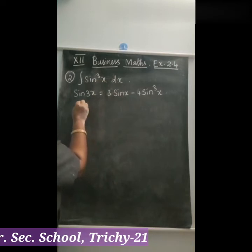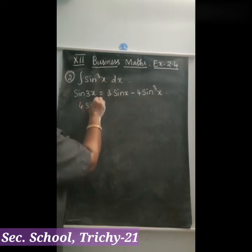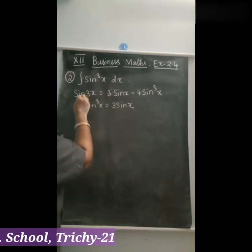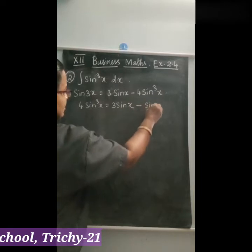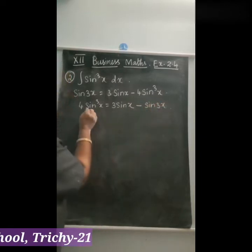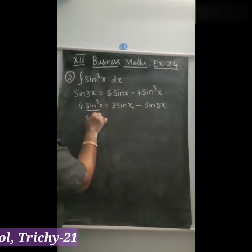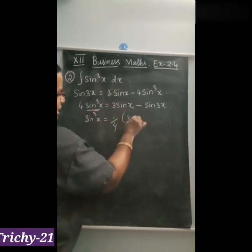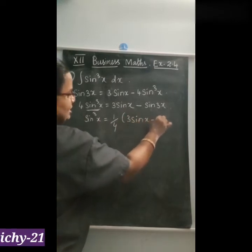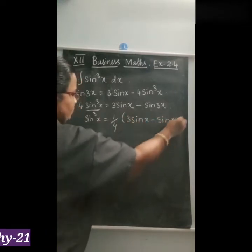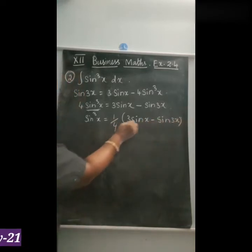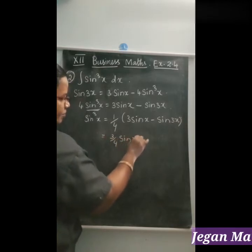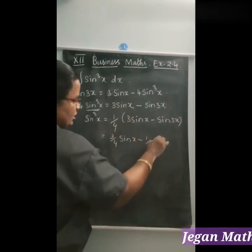Rearranging for sin³x: 4 sin³x equals 3 sin x minus sin 3x. So sin³x equals one-fourth times (3 sin x minus sin 3x), which gives us 3/4 sin x minus 1/4 sin 3x.